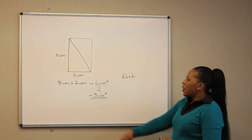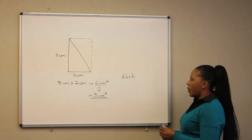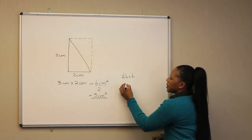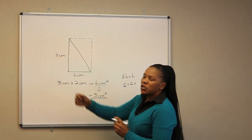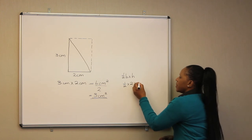In this case, we use 2 as our base. So we say half multiplied by 2, and 3 is the height, multiplied by 3.